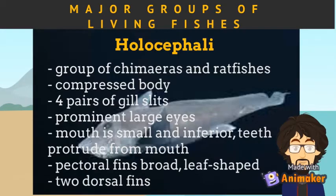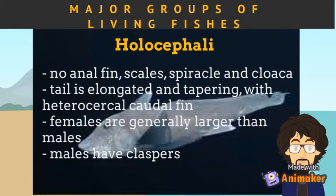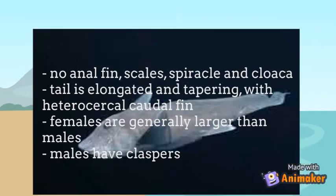The subclass Holocephali is the group of chimeras and ratfishes. They have a compressed body, four pairs of gill slits, and prominent large eyes. Their mouth is small and inferior, with teeth protruding from the mouth. Their pectoral fins are broad and leaf-shaped, and they have two dorsal fins. They do not have an anal fin, scales, spiracles, or cloaca. Their tail is elongated and tapering, with a heterocercal caudal fin. Females are generally larger than males, with males having claspers for copulation.